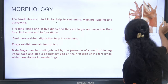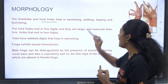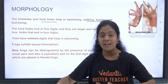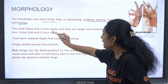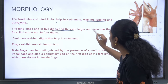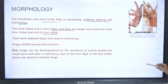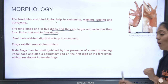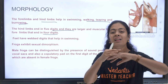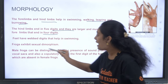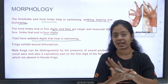The forelimb and hindlimb help in swimming, walking, leaping, and burrowing. The hindlimb ends in five digits and is larger and more muscular than the forelimb, which ends in four digits. The feet have webbed digits that help in swimming.